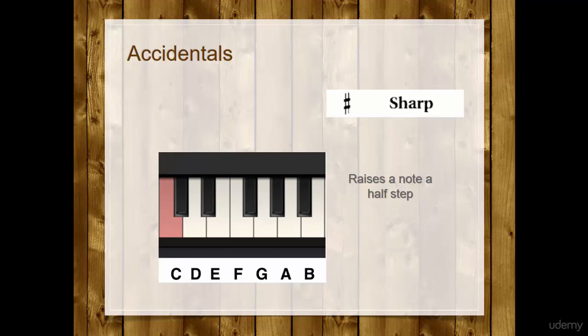There are five accidentals. The first one is the sharp. What a sharp does is that a sharp raises a note a half step.